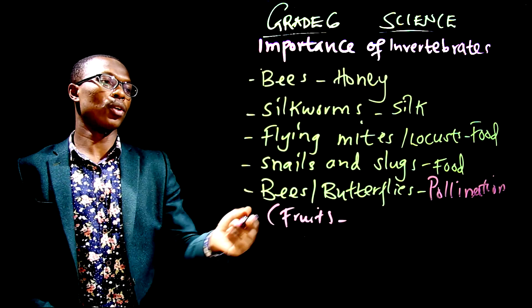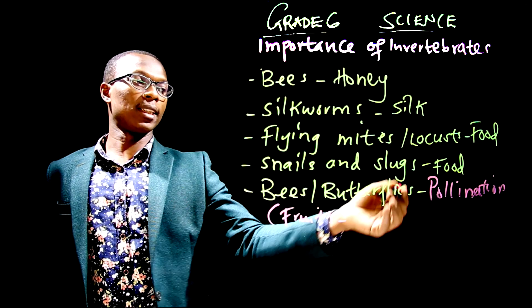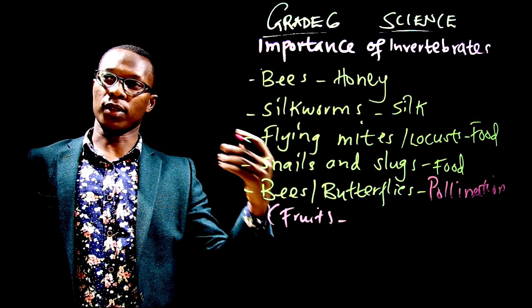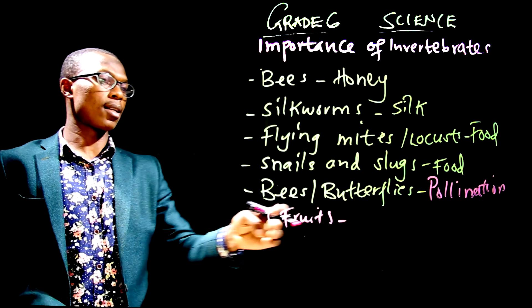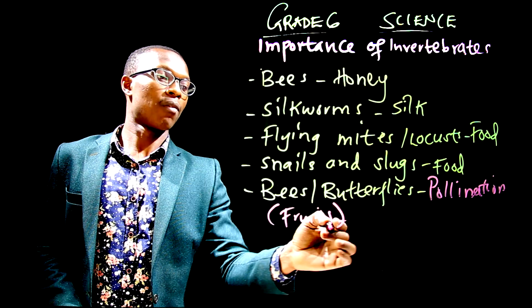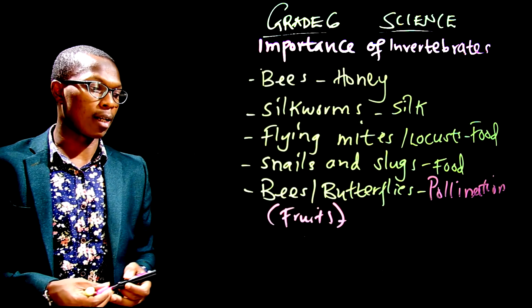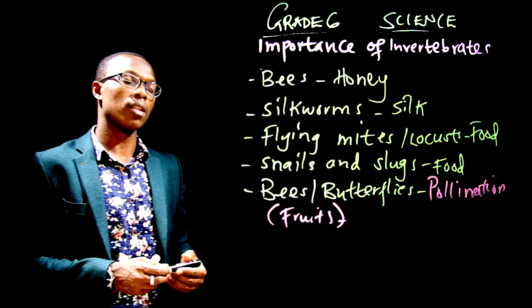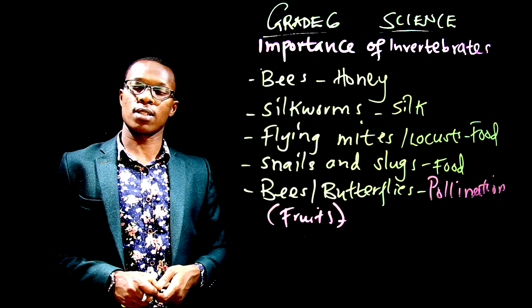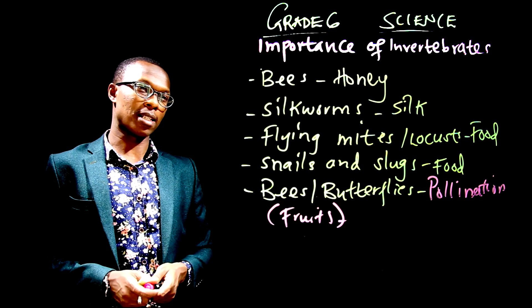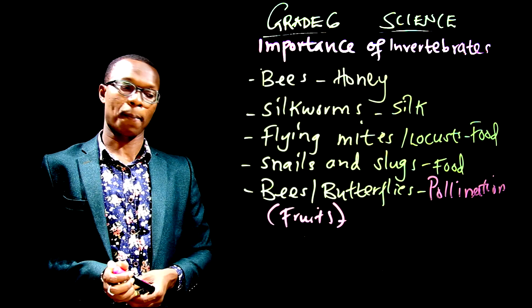So, after pollination we get reproduction, and that's how fertilization occurs, and that's how we end up getting fruits. I hope that's clear.